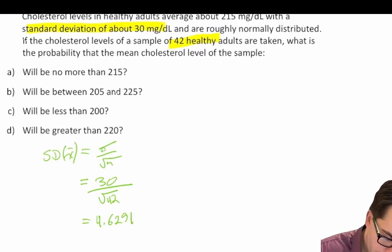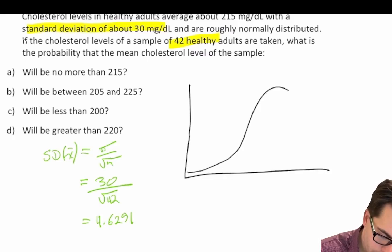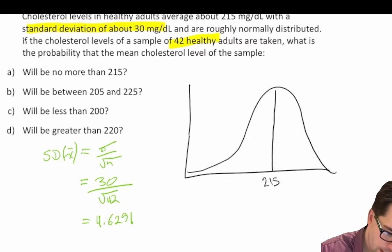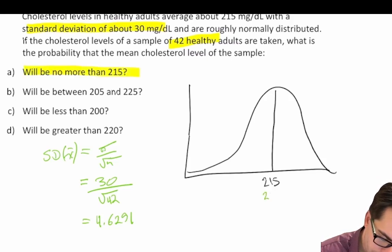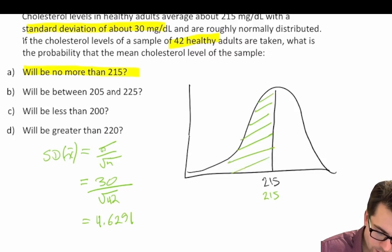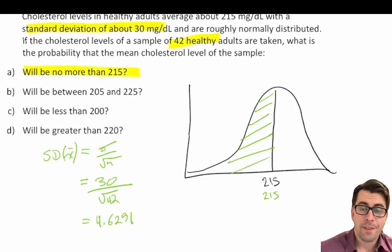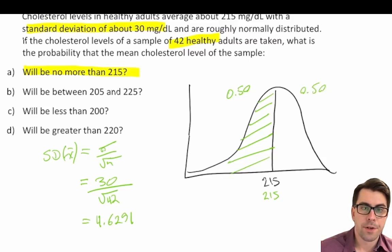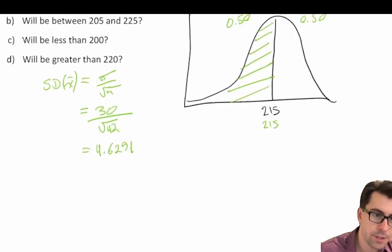The question tells us it's normally distributed and centered around a mean of 215 milligrams per deciliter. In question A we're asked for the probability that the mean will be no more than 215. Intuitively, we know that 50% of our observations will be less than 215 and 50% will be above 215 milligrams per deciliter. But let's go ahead and prove it.